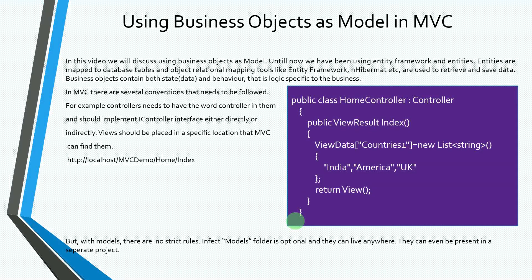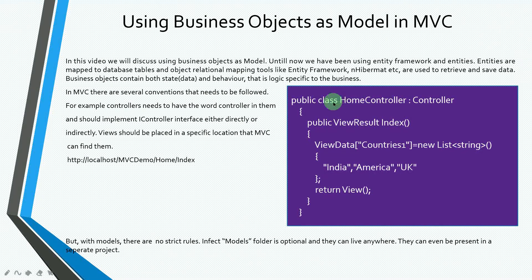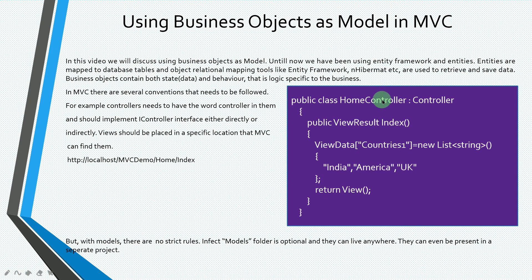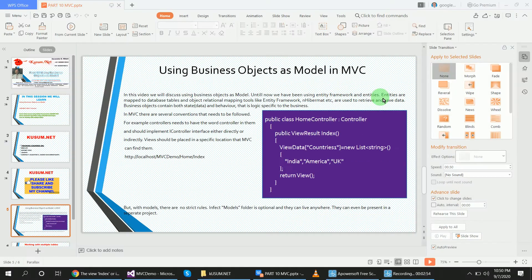In MVC there are several conventions that need to be followed. For example, controllers need to have the word 'controller' in their name. So in an MVC application with a home controller, the name contains the word 'controller'. This is an MVC rule — controllers must have the name 'controller' in them and should implement the iController interface, either directly or indirectly.